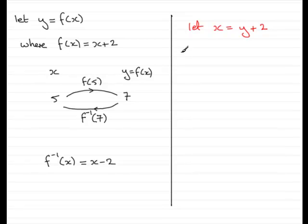Now what I do is I make y the subject. So I need to rearrange the equation that we've got here. So all I need to do is subtract 2 from both sides. So therefore I have x minus 2 equals y. Or in other words, y equals x minus 2.